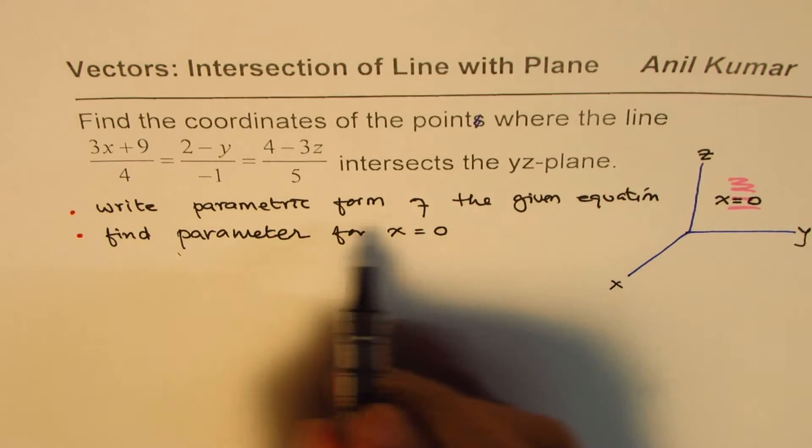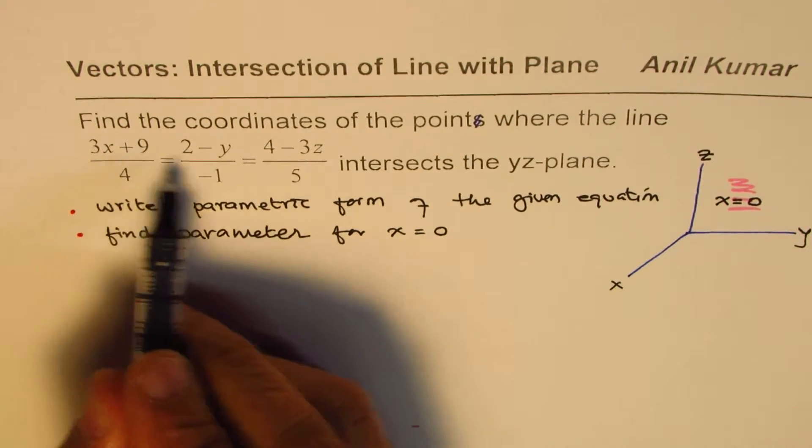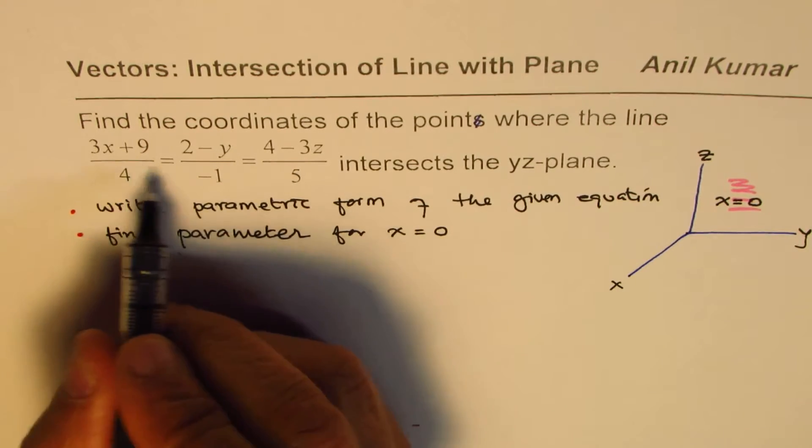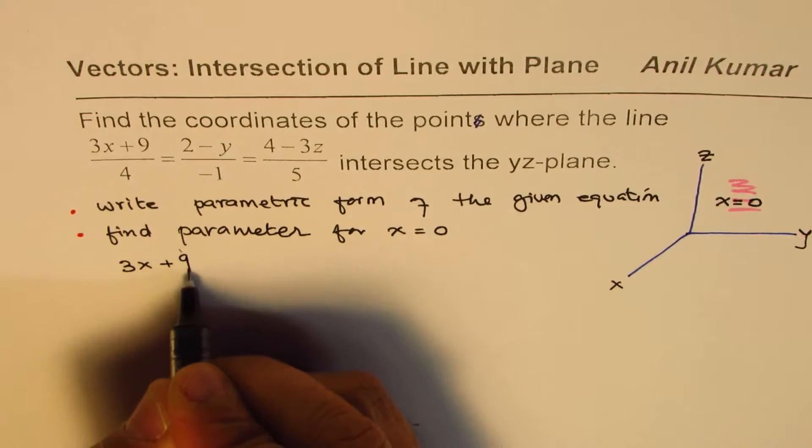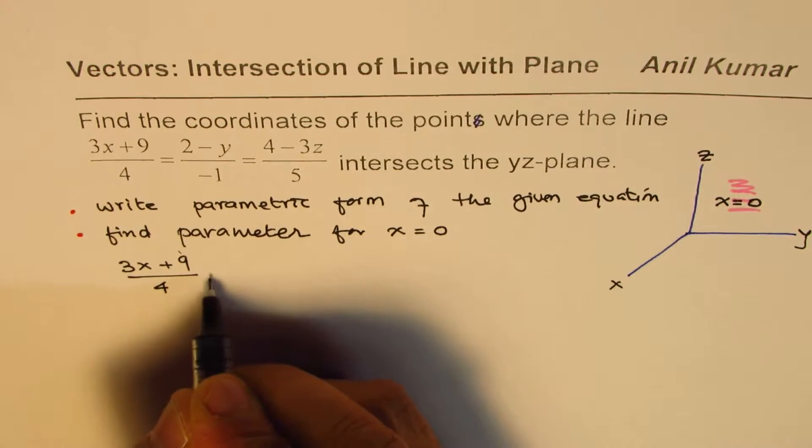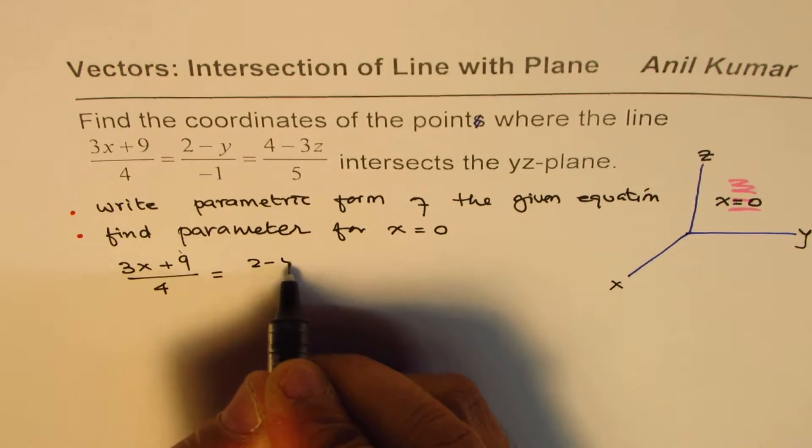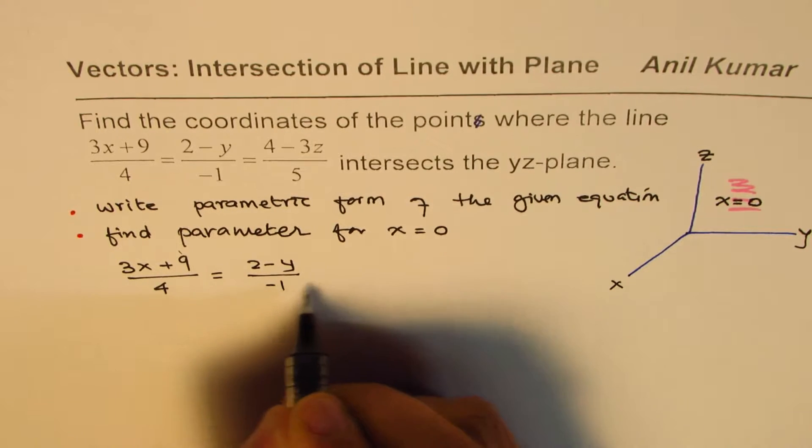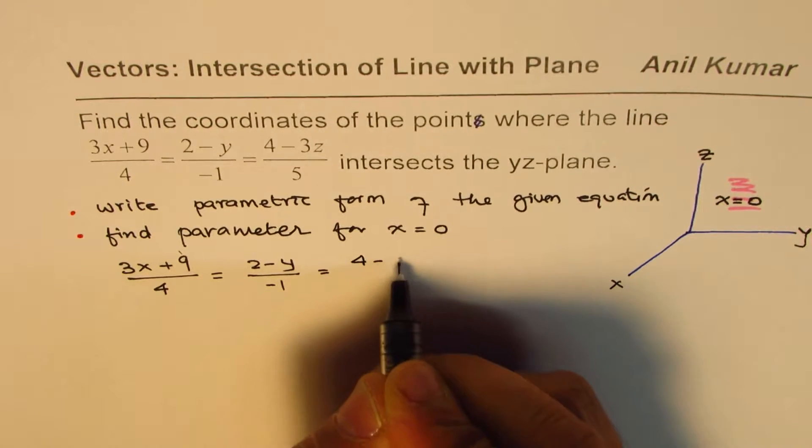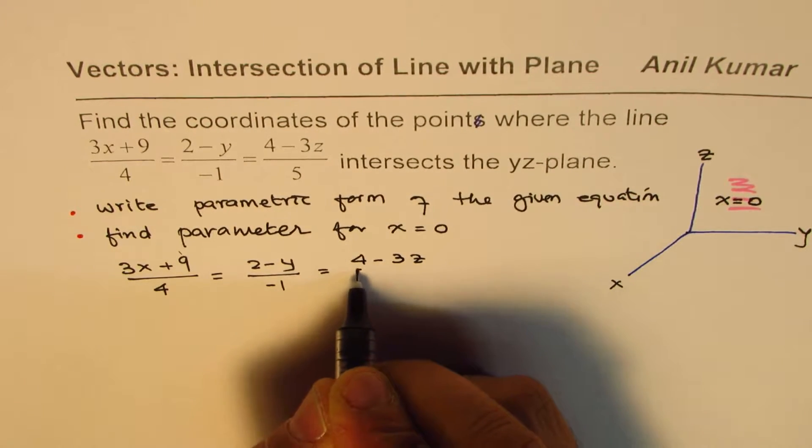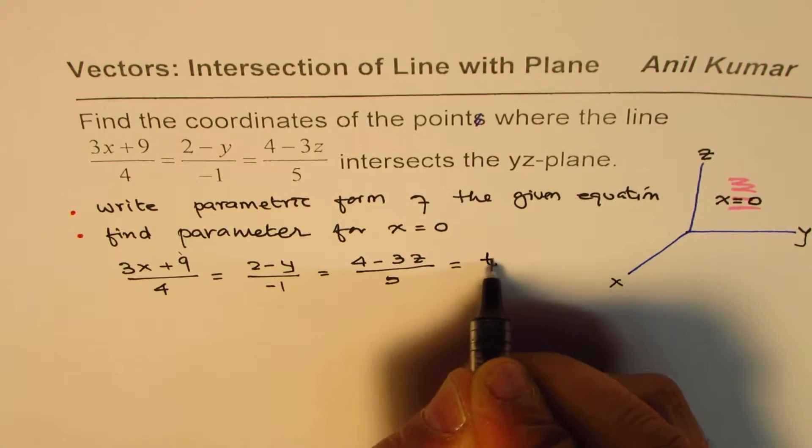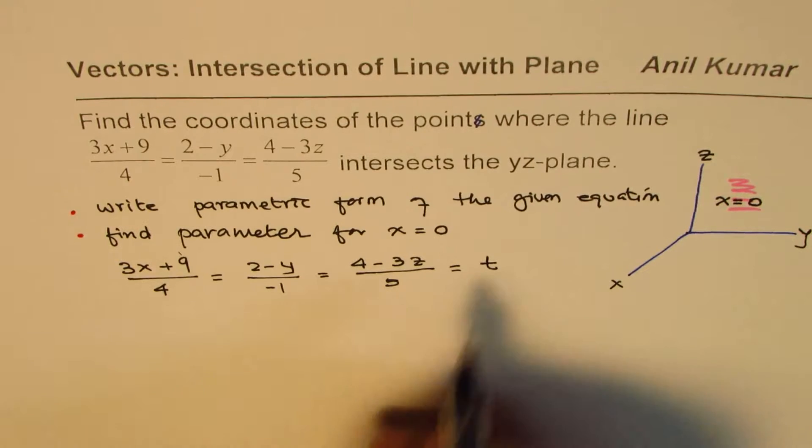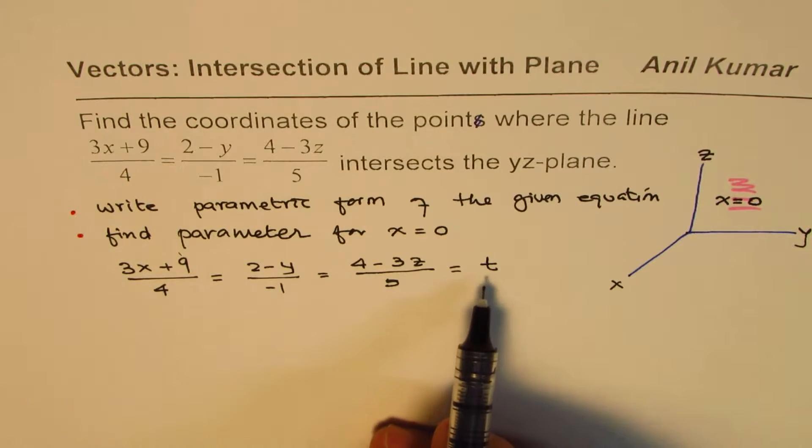How to write this in parametric form? Let me copy this equation first. We have (3x+9)/4 = (2-y)/(-1) = (4-3z)/5. Let this be equal to parameter t. So that is the key. Once you write this as parameter t, you can convert easily into parametric form.